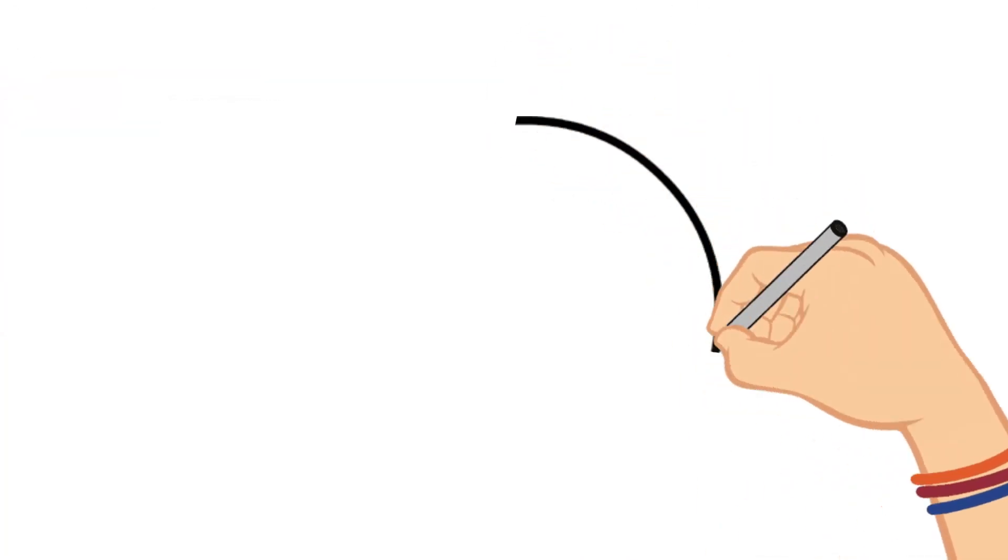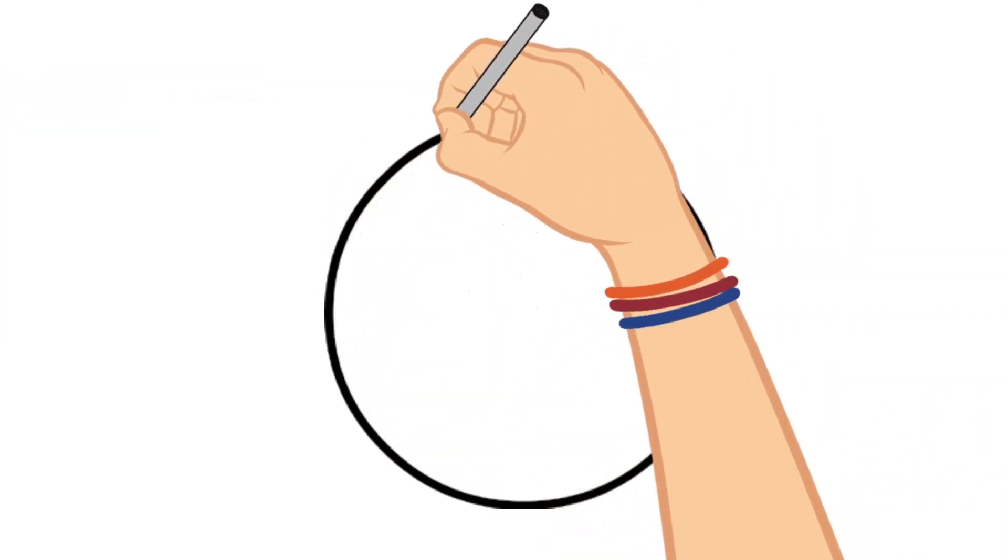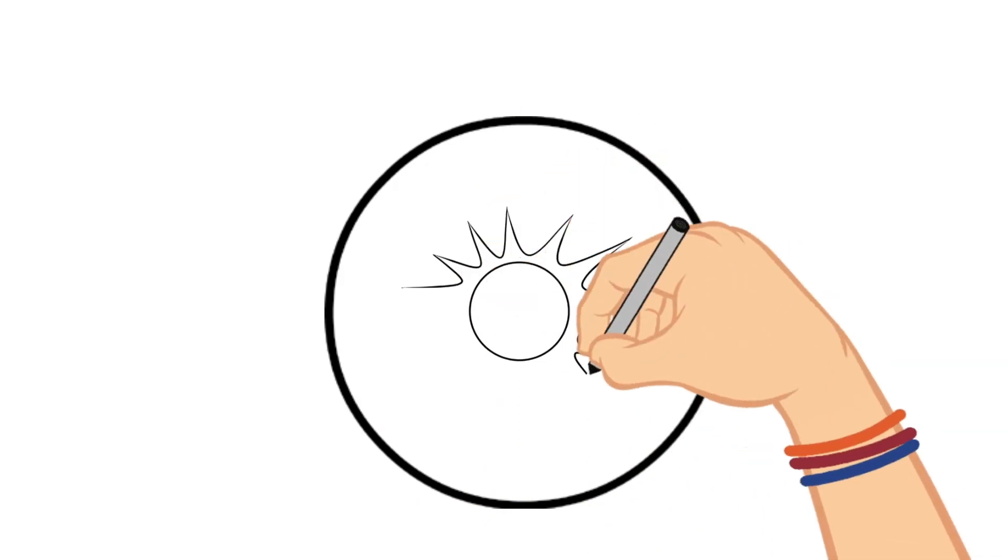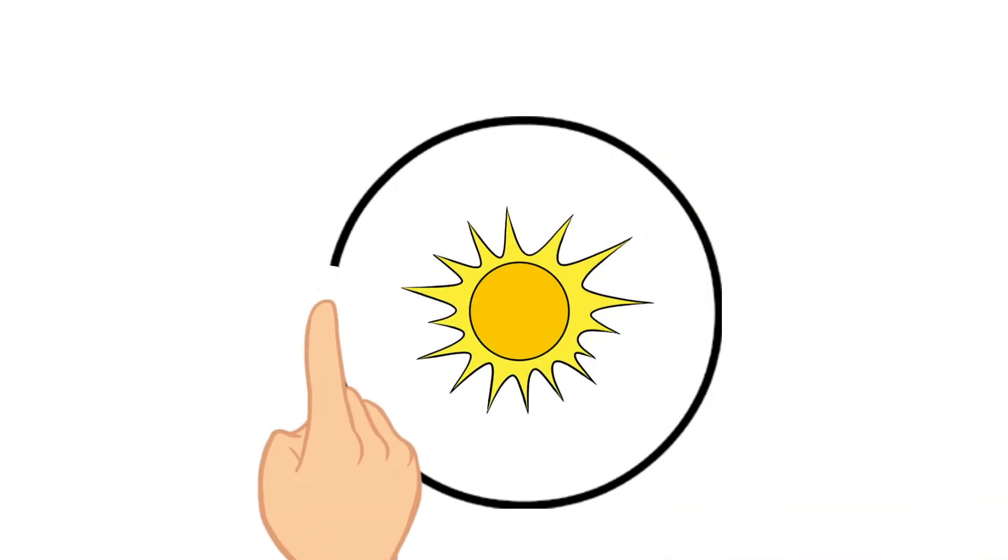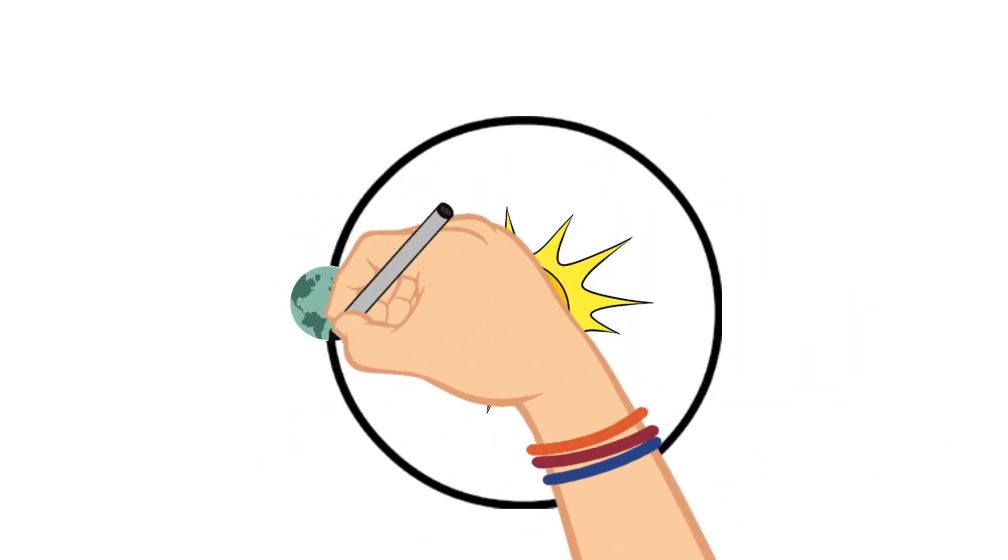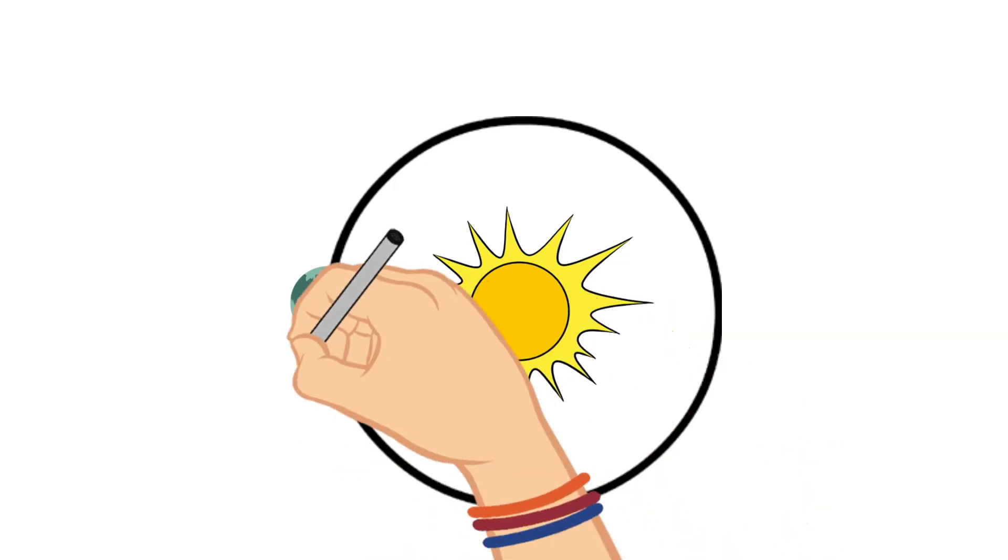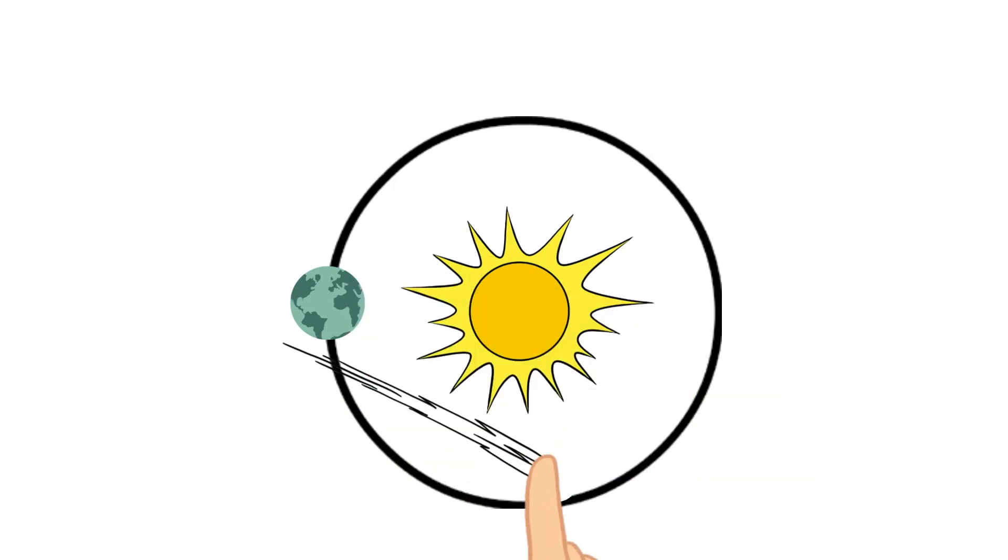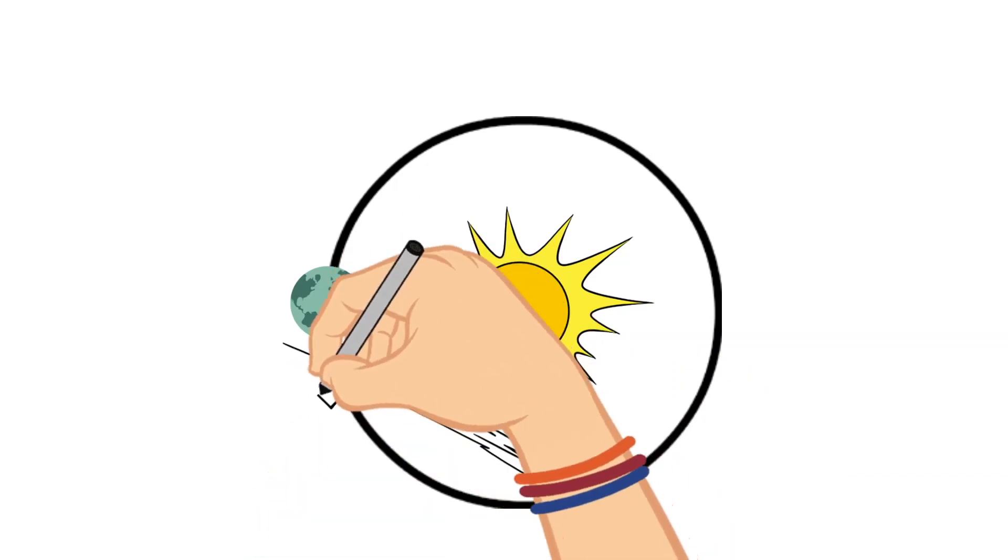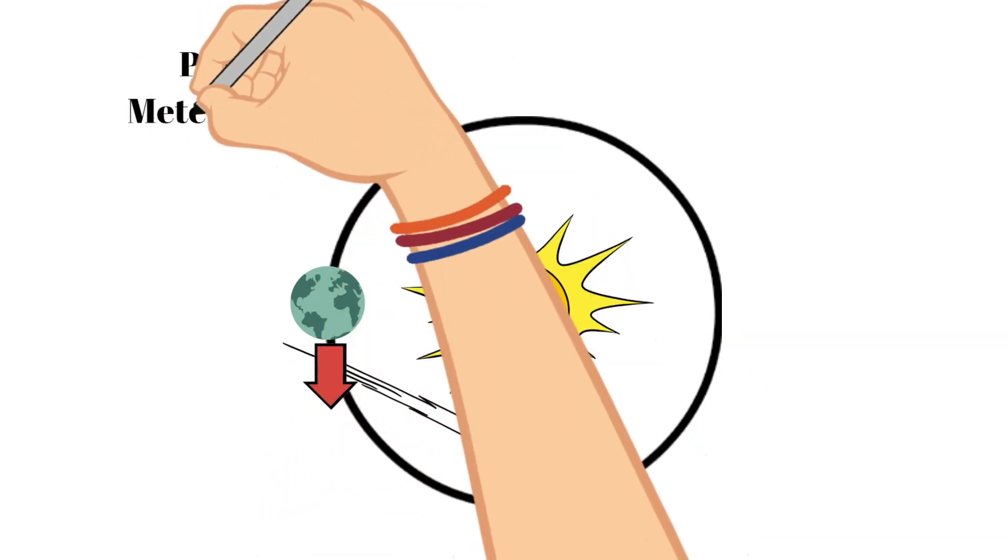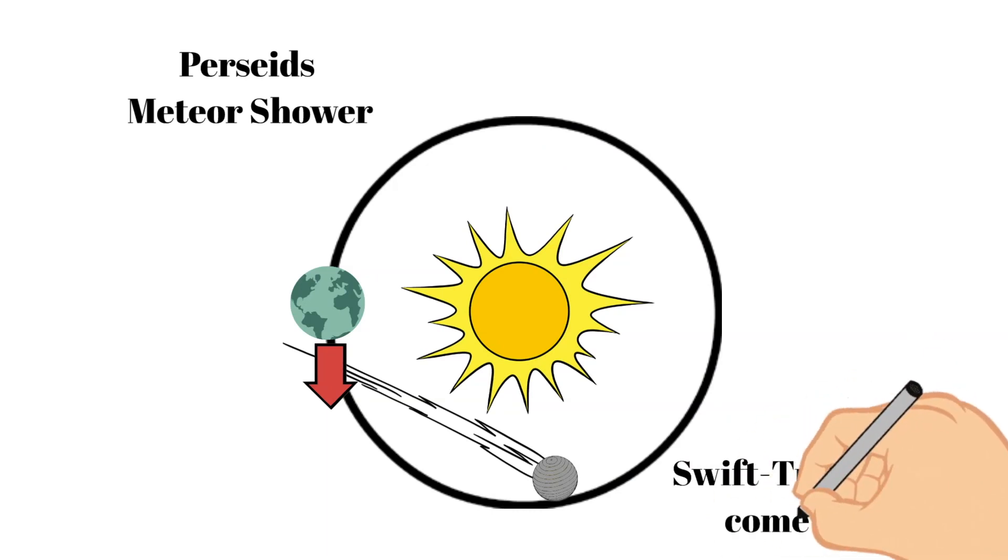An example of this is the Perseids meteor shower, which peaks in August of every year. These shooting stars that are seen during this time are actually tiny pieces of the Swift-Tuttle comet.